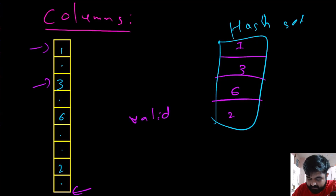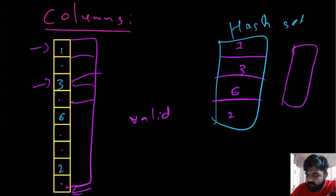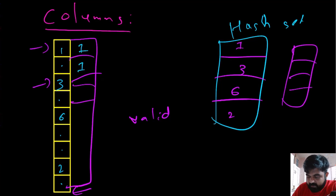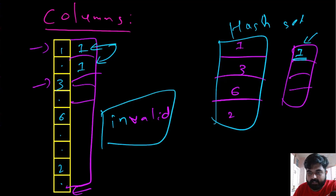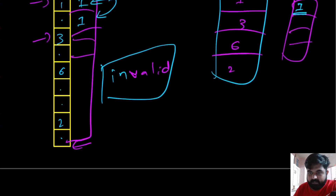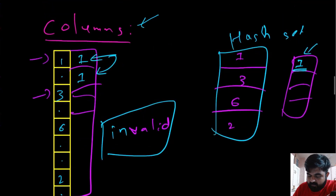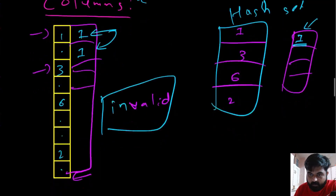For the next column, we create a new hash set. If at any point in time we find duplicated entries — say the second column has two values of one — we first add the first one to the hash set, then the moment we move to the next value and see that one is already present, we can say this column is invalid and therefore the entire sudoku board is invalid. This is the same logic we used for rows.